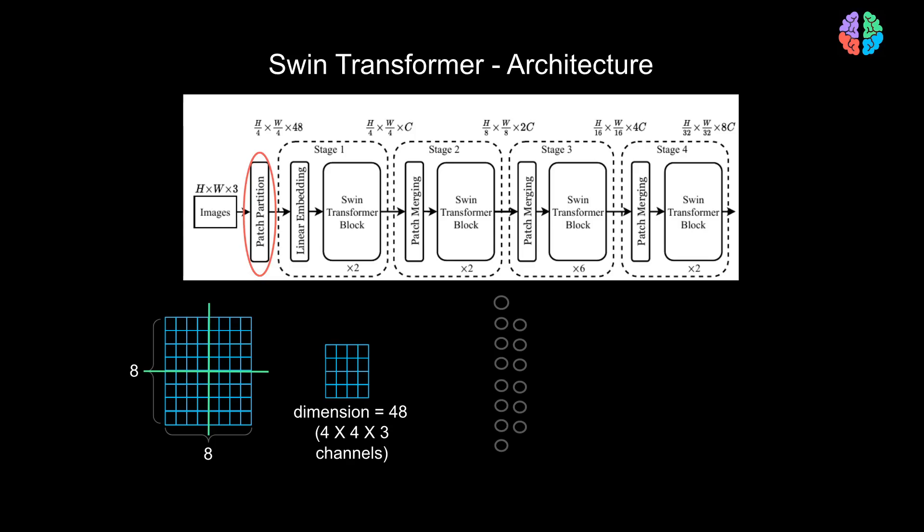Then comes the linear embedding layer. This is just a vanilla neural network which takes an input of 48 dimensional vector of each patch and converts it into a C dimensional vector. In the paper, I think they have used a value of C to be 96, 128 and 192.